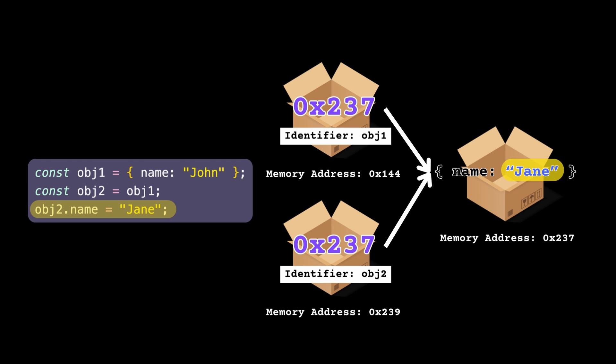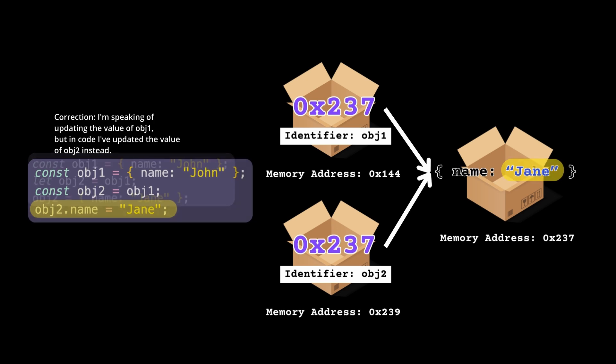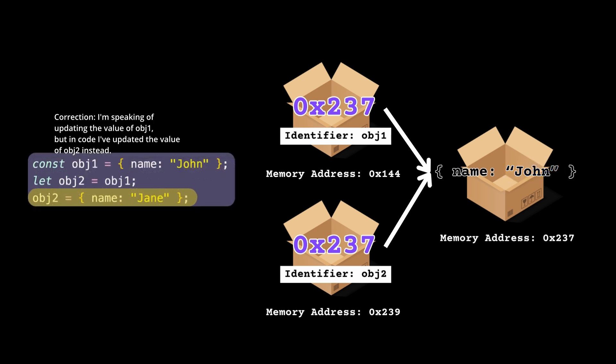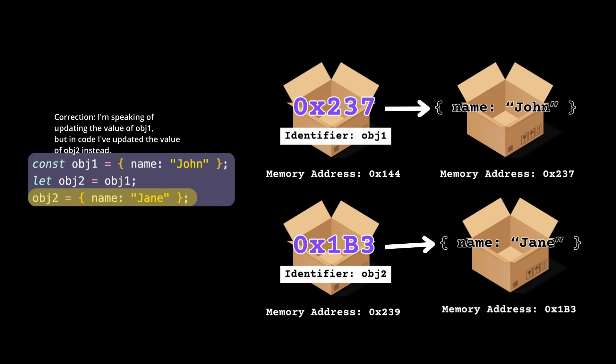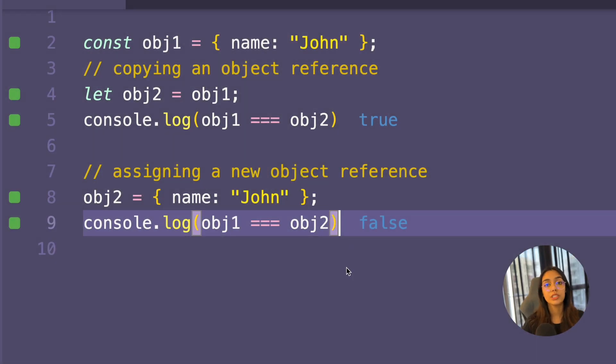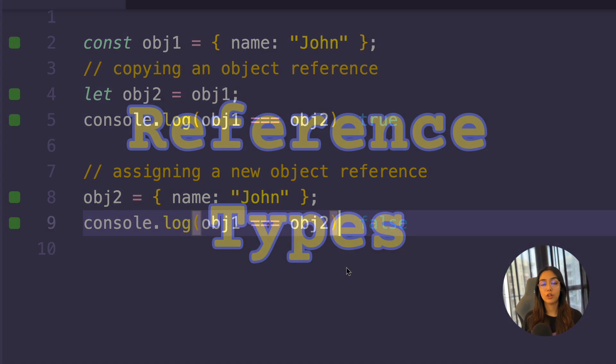Now let's look at another example. After doing obj2 = obj1, what if we reassign obj1 = { name: 'jane' }? Will obj2 also be updated? The answer is no. When you reassign obj1, this new value is stored at a new memory location and obj1's reference is updated to point there. So now obj1 and obj2 refer to different objects. Even if obj1 = { name: 'john' } stores the same properties, it still creates a new value in memory. So obj1 === obj2 prints false.